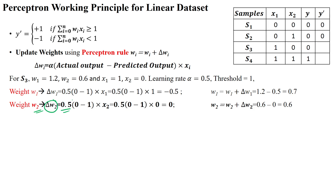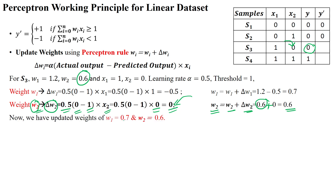For w2: delta_w2 = alpha * (actual_output - predicted_output) * x2 = 0.5 * (0 - 1) * 0 = 0. Applying the update: w2 = w2 + delta_w2 = 0.6 + 0 = 0.6. So the new updated weights are w1=0.7 and w2=0.6. Since new weights are updated, we must restart from sample number 1 to check whether the new weights correctly classify all samples.